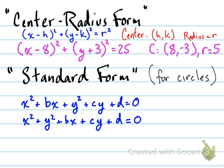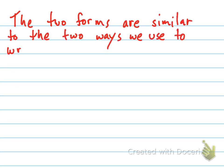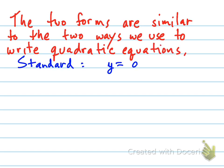So I wouldn't worry too much about that, but if it is confusing, let me just say this: that these equation forms here are very, I would say, analogous to the two forms that we use to write quadratic equations. If you remember, there's two ways to write quadratic equations: standard form and vertex form, right?